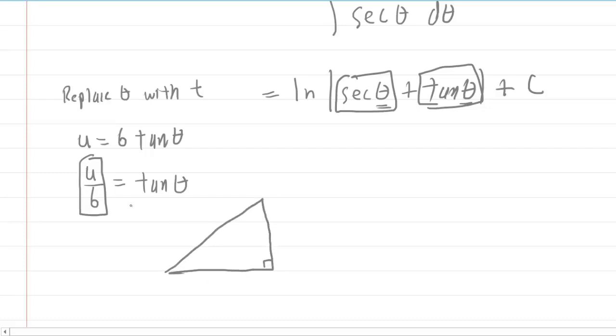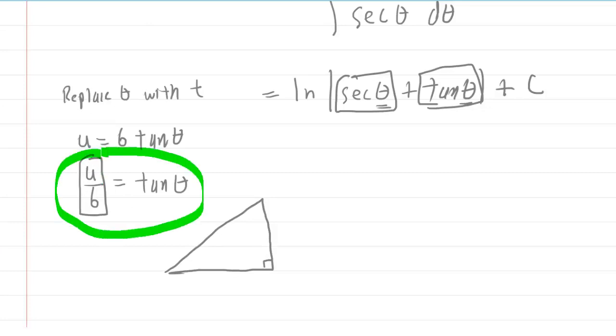And you're always going to base your right triangle off of your original substitution here. So we can see that the tangent was equal to u over 6. Let's mark theta right here. We know tangent is the ratio of opposite to adjacent. So the opposite side to the angle would be u, and the adjacent would be 6. You could then do Pythagorean theorem to figure out the hypotenuse. And if you did that, you would see that the hypotenuse is equal to the square root of 36 plus u squared.